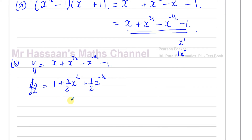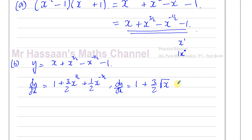Now I rewrite dy/dx in a more friendly form for substituting values. Rather than index form, I write it back into surd form: 1 plus 3 over 2 times the square root of x, plus 1 over 2 times the square root of x cubed — since the numerator of the index is the power and the denominator is the root.